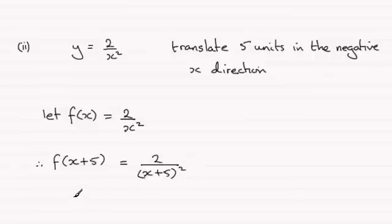So therefore, the equation is y equals 2 over x plus 5 all squared. You could leave it as f of x plus 5 if you wish, but I'll just put it back to y equals.